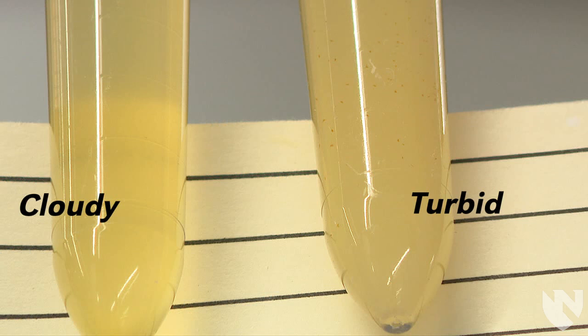Lastly, we have a cloudy urine versus a turbid urine. Notice in the turbid urine, we cannot see the lines at all and we have very large dense particles.